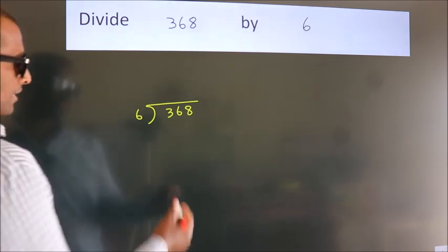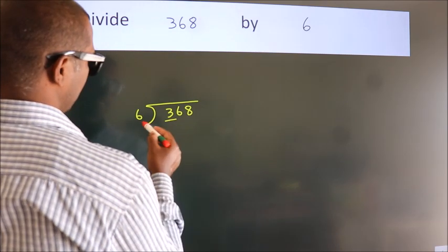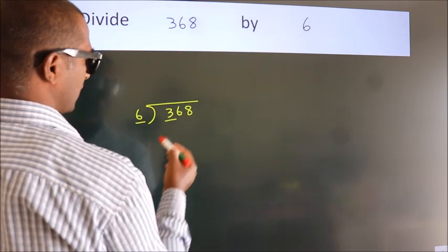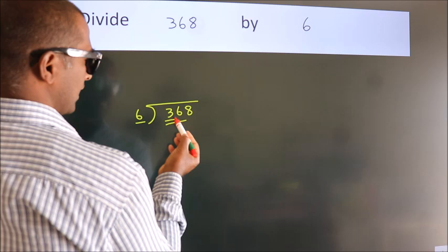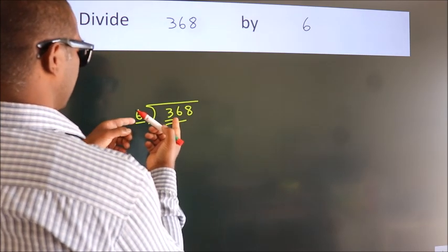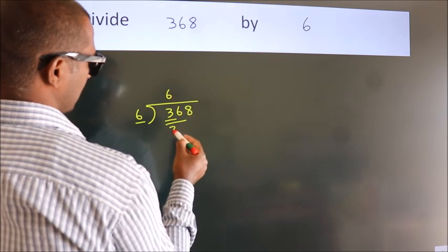Next, here we have 3, here 6. 3 is smaller than 6, so we should take 2 numbers: 36. When do we get 36? In the 6 table, 6 times 6 is 36.